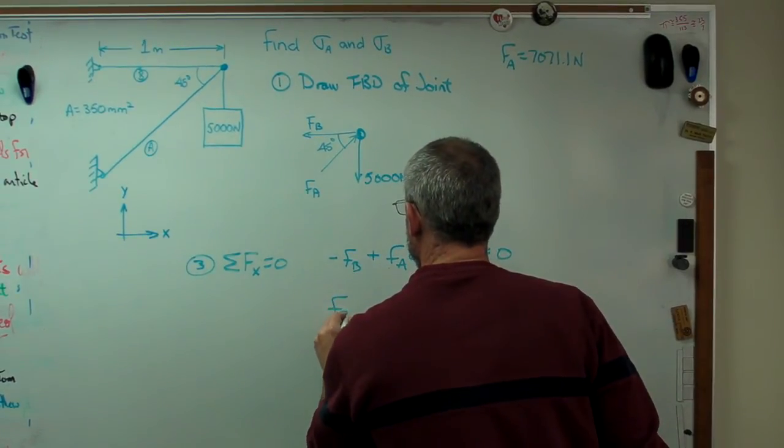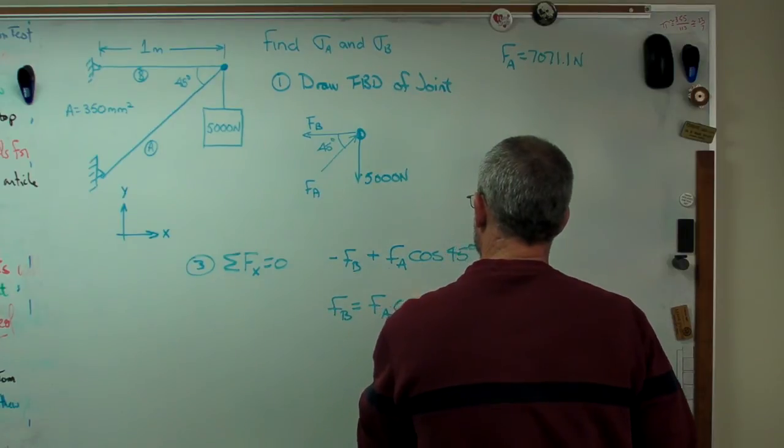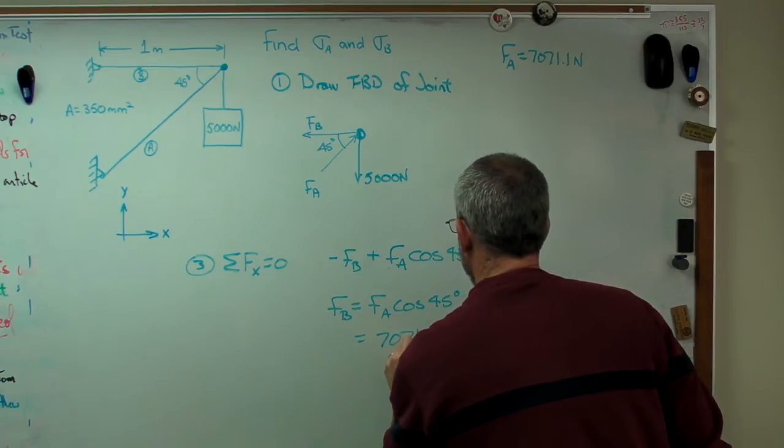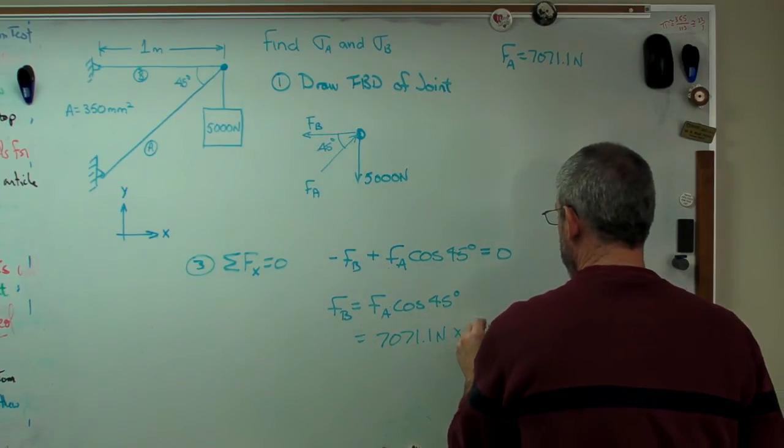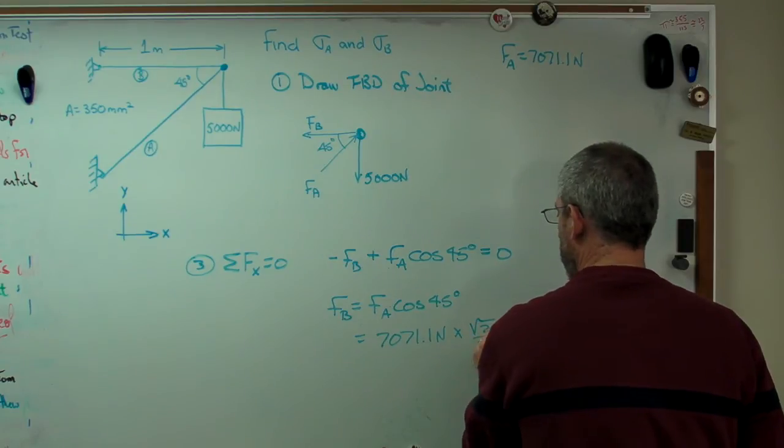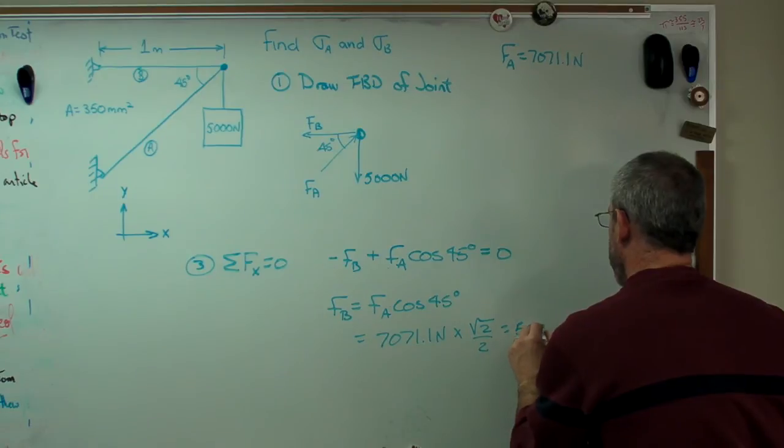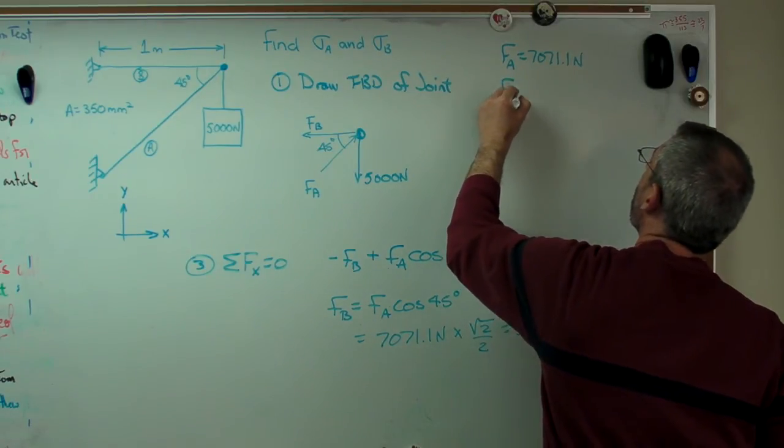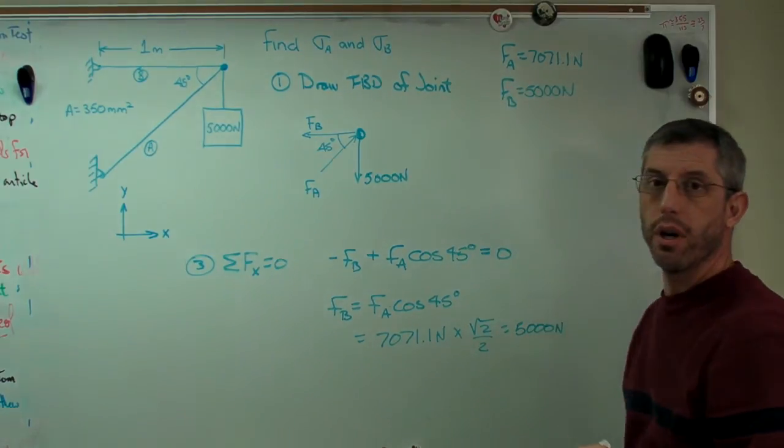And I want the horizontal component of FA, not the whole thing. And that has to equal zero as well. So I know FA. Okay, let's solve for FB. Alright, so that's 7071.1 newtons times the square root of 2 over 2. And this is going to turn out to be 5,000 newtons if you run through the math.